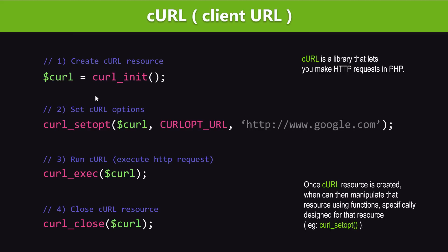We create the curl resource with the curl initialize function — that's the first step. The second step is to set curl options using the curl_setopt function. The third step is to run curl or execute the HTTP request with the curl execute function. And there's a fourth step where we close the curl resource with curl_close to free up resources.